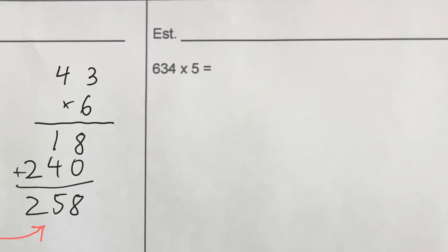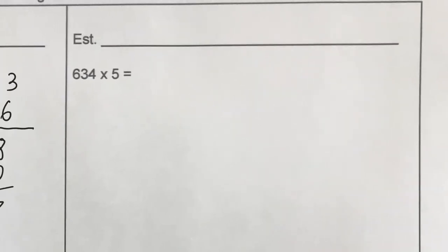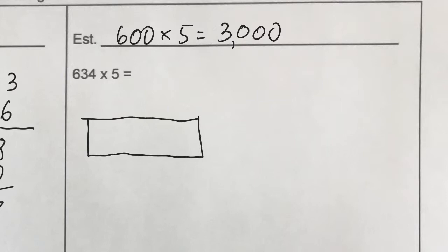Now for the next one, first let's do our estimate. We're going to round to the nearest 100. So 634 rounds to 600 times 5 and our answer is going to be somewhere around 3000 and probably more because we rounded down. And it might be off by a few hundred but that's okay. So now for the lattice, if you have three digits by one digit, make a longer rectangle and you're going to split it into thirds.